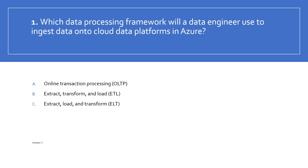ELT is extract, load and transform. ETL is extract, transform and load. OLTP is online transaction processing. ELT is the typical process for ingesting data from an on-premises database into the cloud, so a data engineer uses ELT to ingest data onto cloud data platforms. Option C is the right answer.